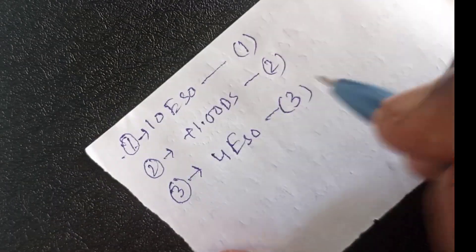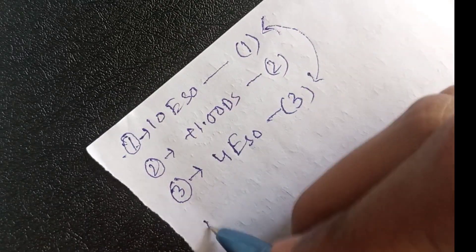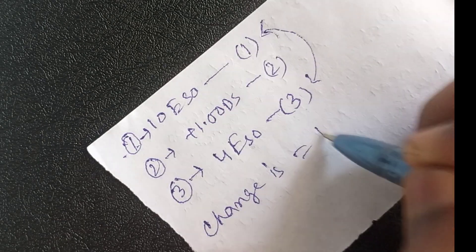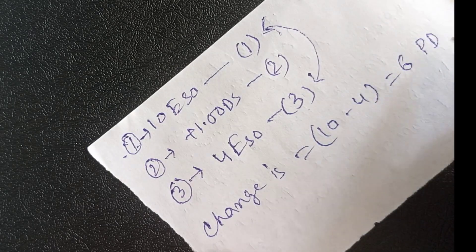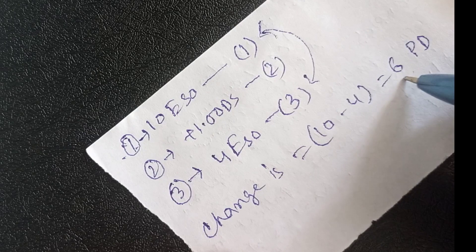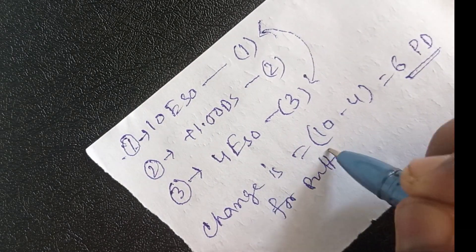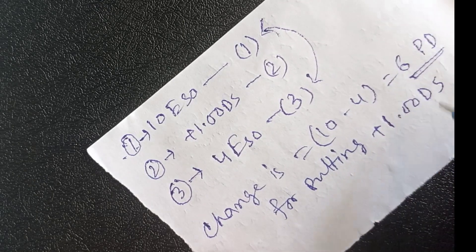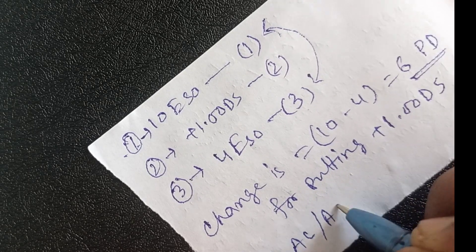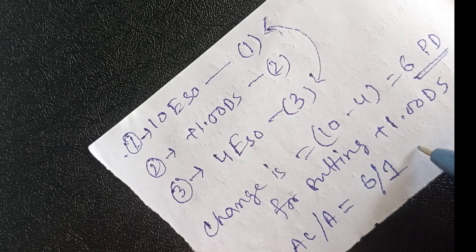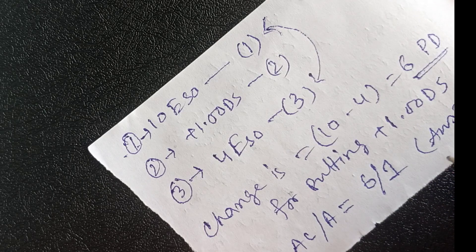The patient initially has 10 esophoria — that is the first step. Then we put a plus one diopter spherical lens — that is the second step. After putting this plus one diopter spherical lens, the patient has 4 esophoria. The change in vergence status is 10 minus 4, which equals 6 prism diopters. This 6 prism diopter change happened due to the plus one diopter spherical lens. So the AC/A ratio equals 6 divided by 1.